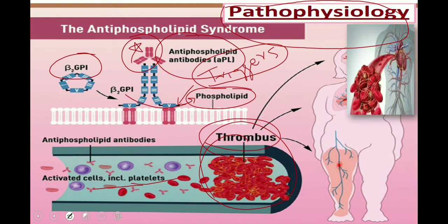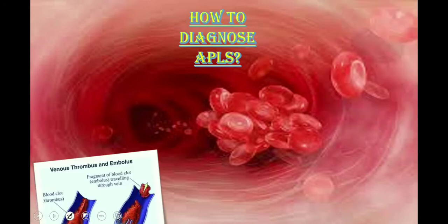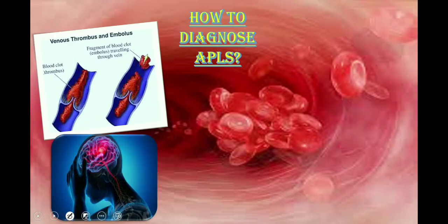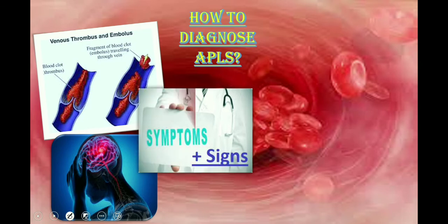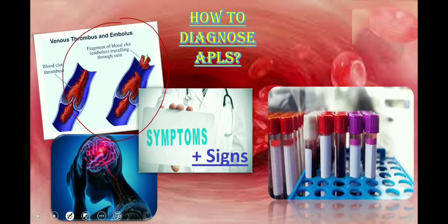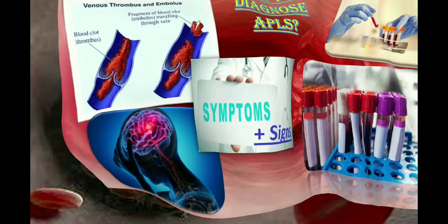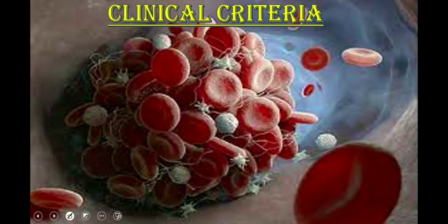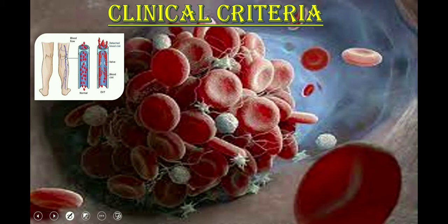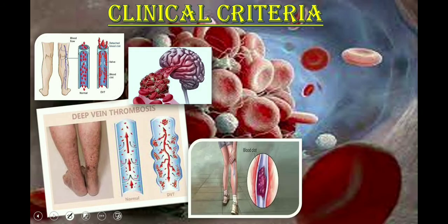To diagnose antiphospholipid syndrome, the diagnostic criteria is both clinical and laboratory. The clinical criteria include vascular thrombosis and placental morbidity. The laboratory criteria include checking certain antibodies, which will be discussed later. In terms of clinical criteria, clot formation occurs in different parts of the body including the placenta, resulting in thrombosis at different levels and causing certain adverse conditions.